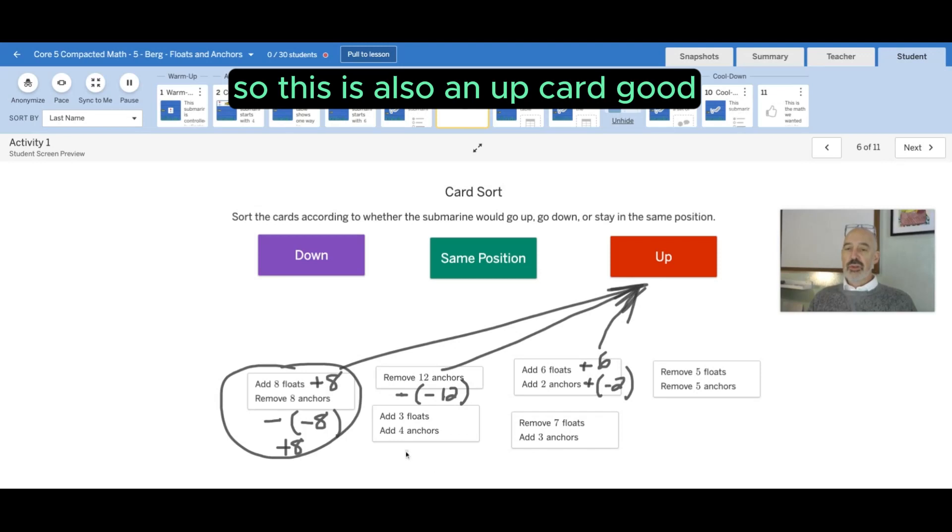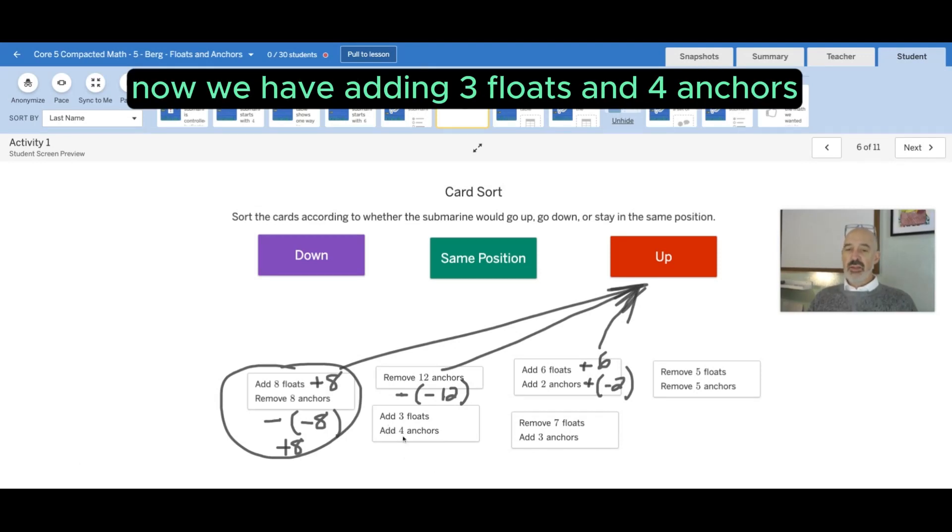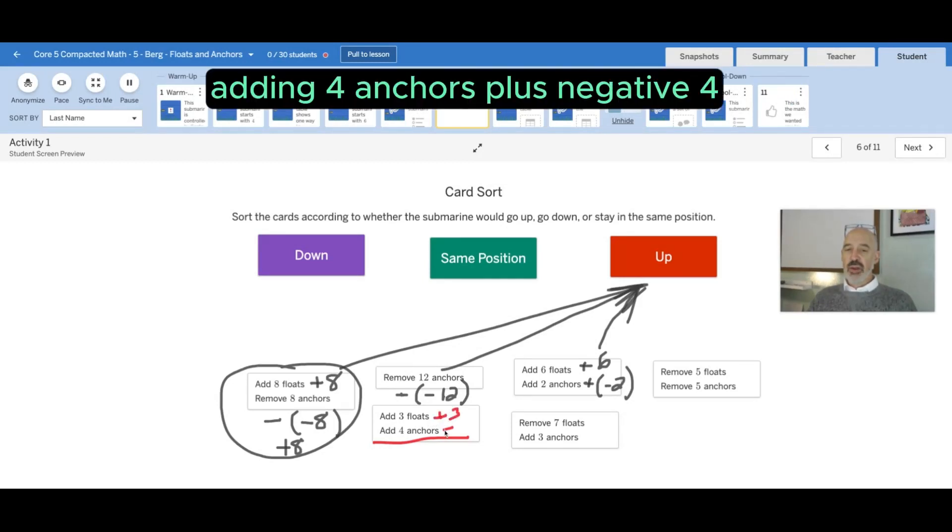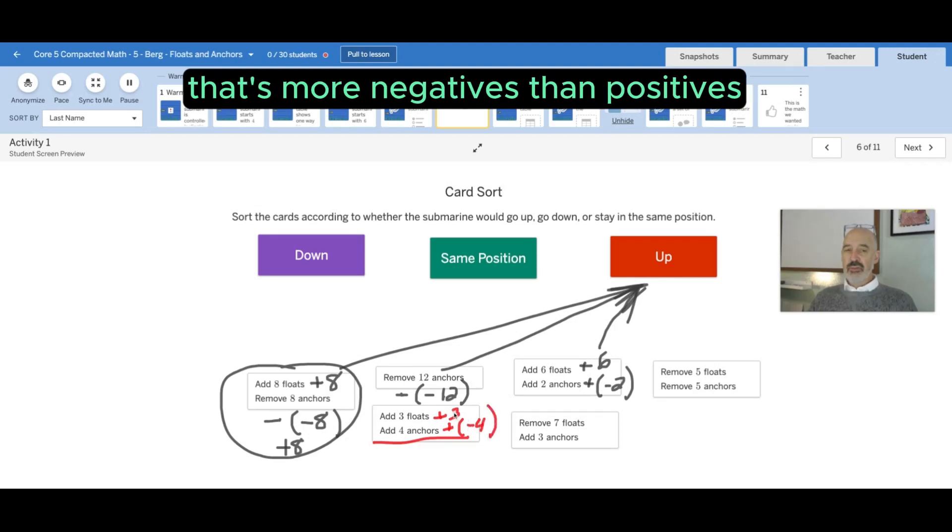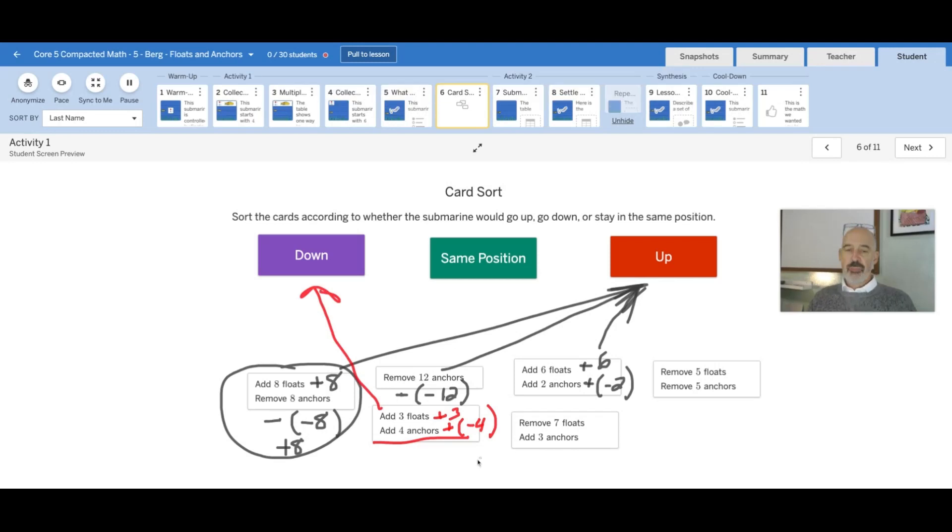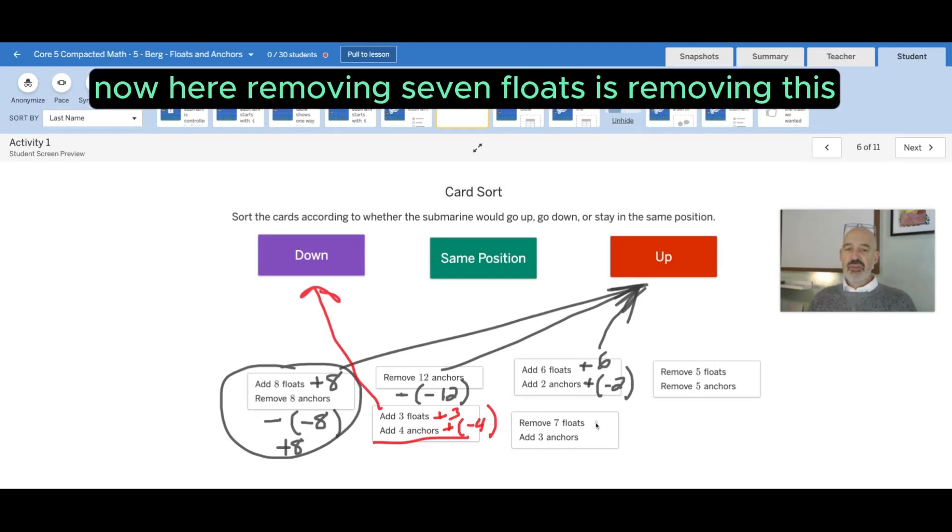Good. Now we have adding three floats and four anchors. Adding three floats plus three, adding four anchors plus negative four. So that's more net negatives than positives, so this card is pulling it down.